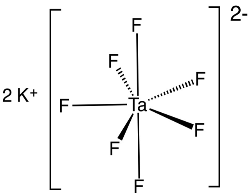K2TaF7 plus 5Na yields Ta plus 5NaF plus 2KF. K2TaF7 is susceptible to hydrolysis. For example, a boiling aqueous solution of K2TaF7 yields potassium oxyfluorotantylate, known as Marignac salt. In order to prevent hydrolysis and co-precipitation of potassium oxyfluorotantylate, a small excess of HF is added to the solution.